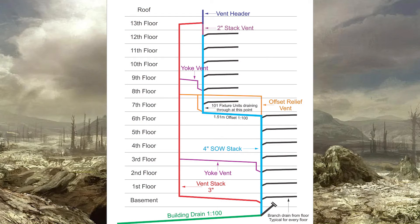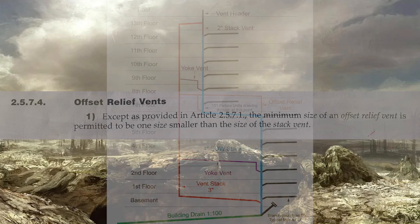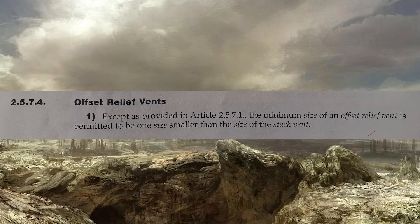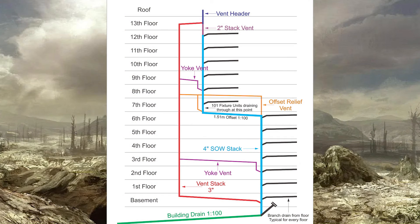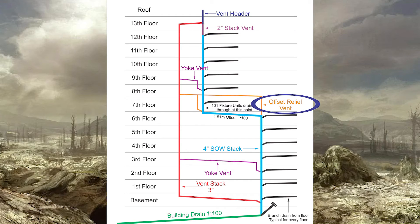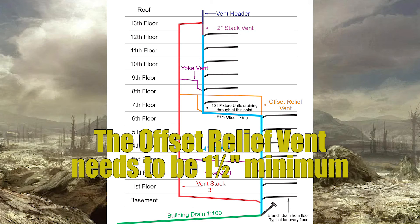So how do we size them? For that we have to look at clause 2574. Except as provided in article 2571, the minimum size of an offset relief vent is permitted to be one size smaller than the size of the stack vent. In this example we have a two inch stack vent, which means the offset relief vent needs to be one and a half inches minimum.